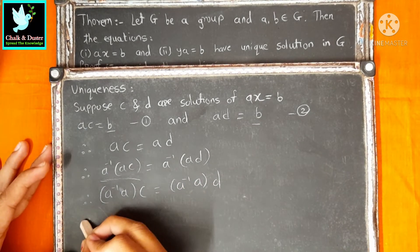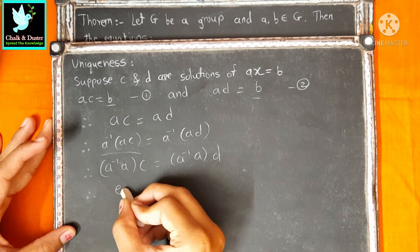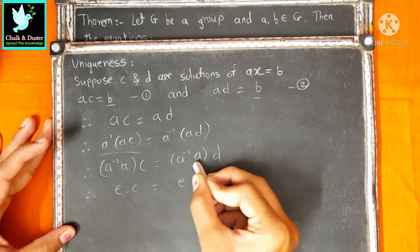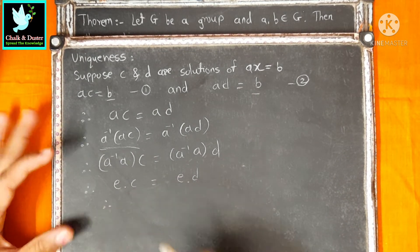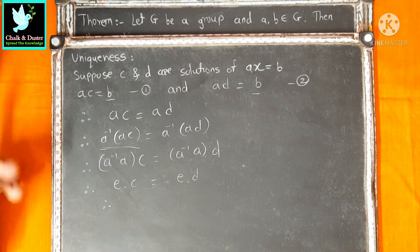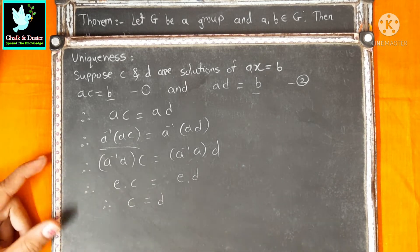Now, we know that A inverse into A is identity. So, identity into C equals identity into D. Next step, any element into identity is that element. So, C equal to C and D equal to D, therefore C equals D.